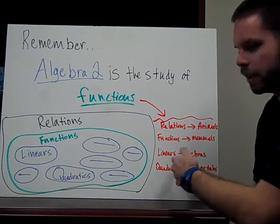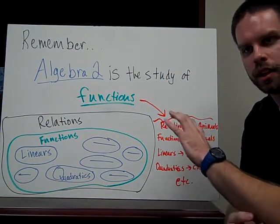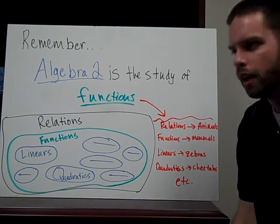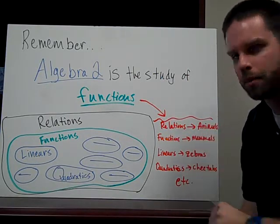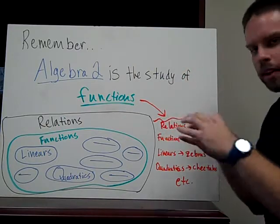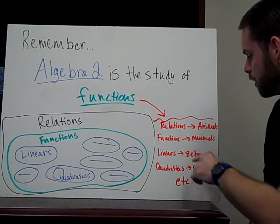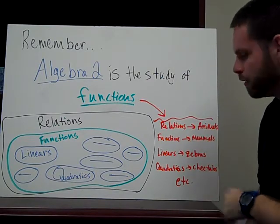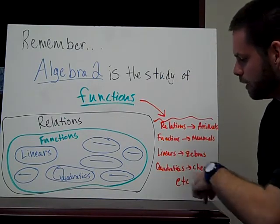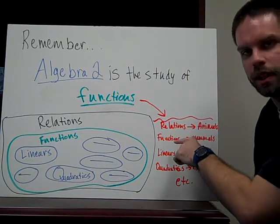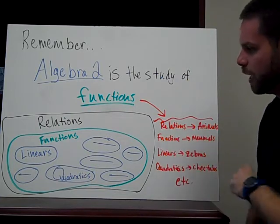We've already talked about linears. We talked about linear functions, those are straight lines. I just call them zebras, but those would be a specific kind of mammal. So we've got the big thing of animals, then we've got a specific large group called mammals, and then we get into specific kinds of animals after that. It's the same thing with math. We have relations, then we have functions, then we have specific kinds of functions.